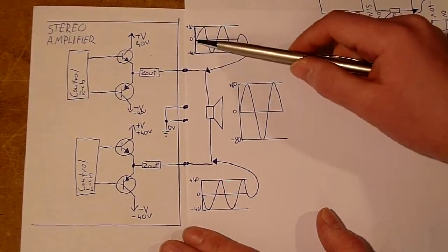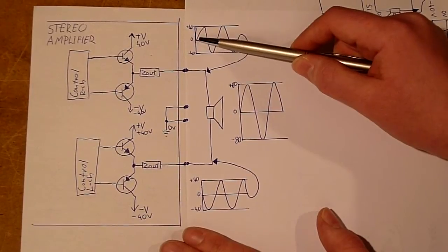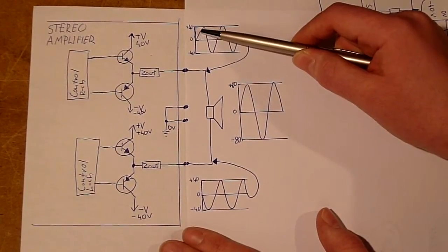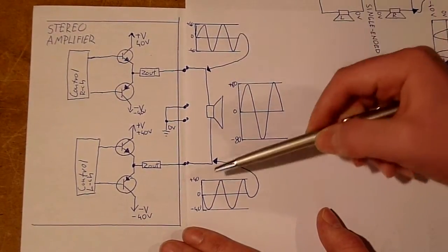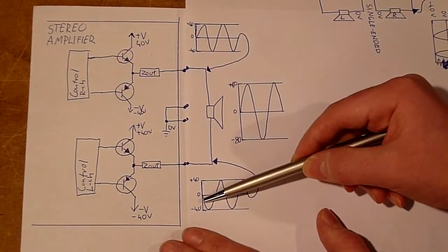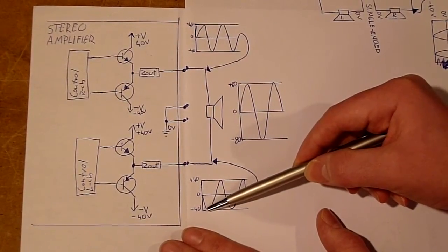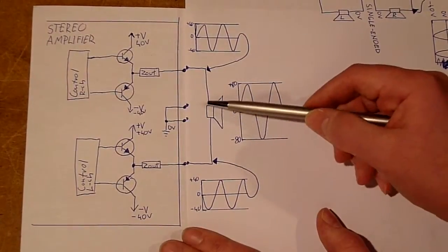When one of the amplifiers swings upward going towards plus 40 volts, the other one will swing downwards going towards minus 40 volts.